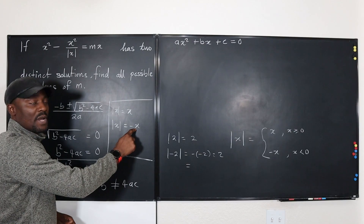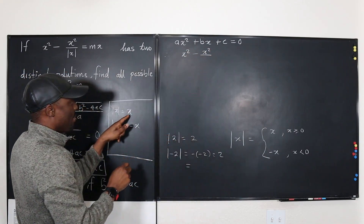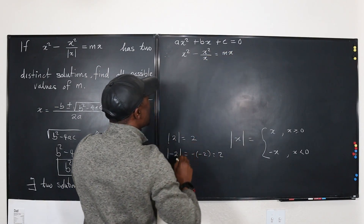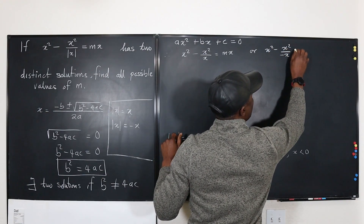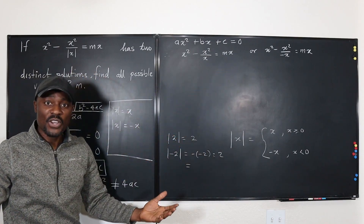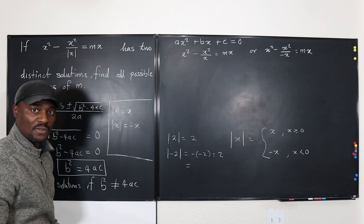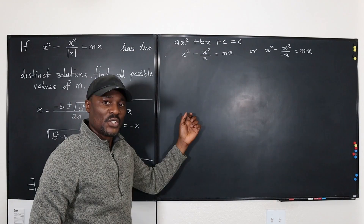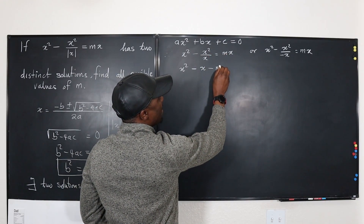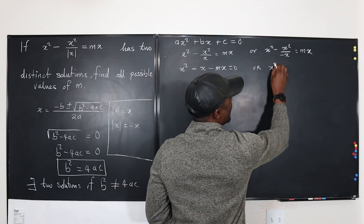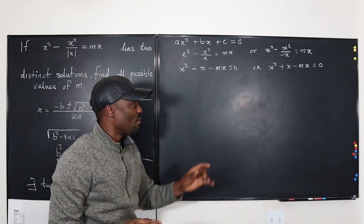Applying this to the equation, the absolute value gives two versions. First version using the positive case: x squared minus x squared over x equals mx. Second version using the negative case: x squared minus x squared over negative x equals mx. Simplifying: the first gives x squared minus x minus mx equals zero, and the second gives x squared plus x minus mx equals zero.